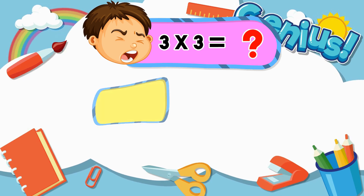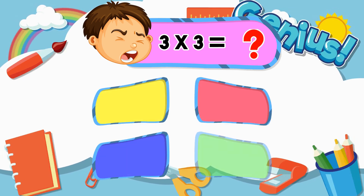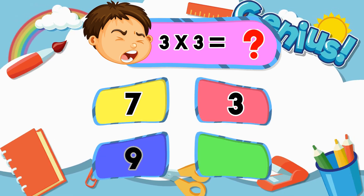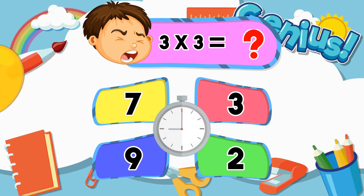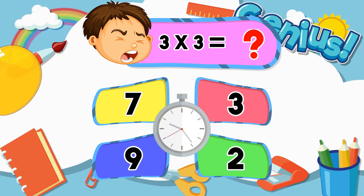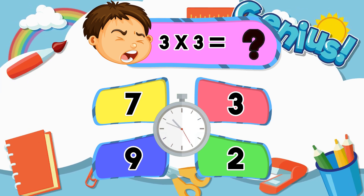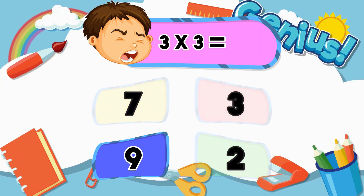What is three times three? Three, seven, three, nine, two. Nine.